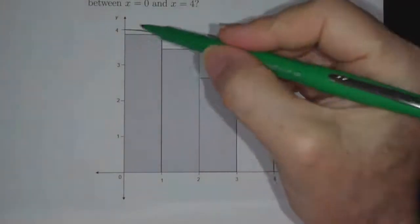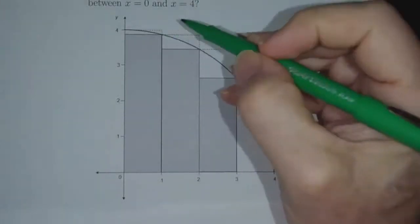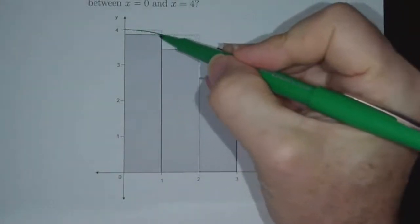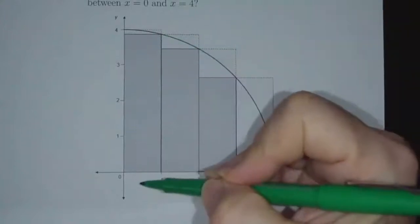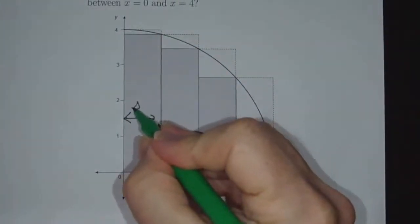We have to figure out what is the area of the first strip. The area of the first strip is, well, the first strip, the top of it is the curve, and the bottom is the x-axis, and its width is 1.